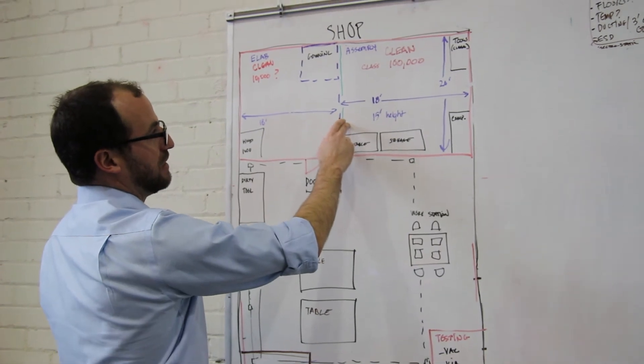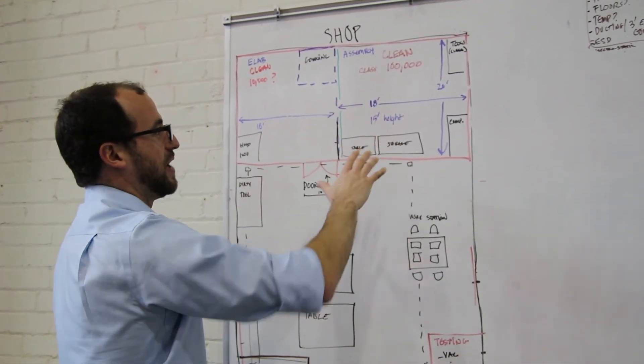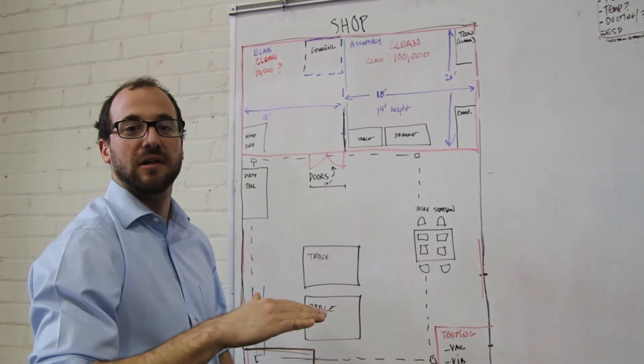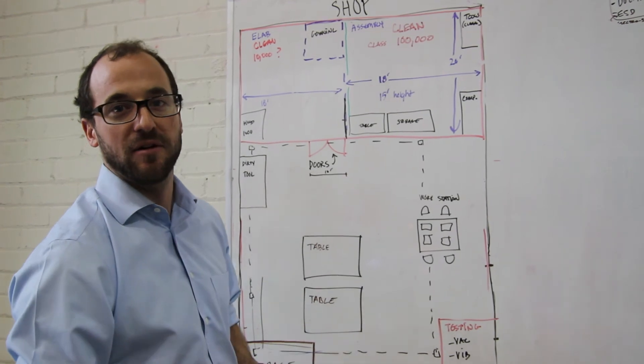We'll also have a crane in this clean facility. We're going to have a 15-foot high ceiling and this crane will allow us to lift the lander off the ground, spin it, assemble things underneath it, attach our payloads and that sort of thing.